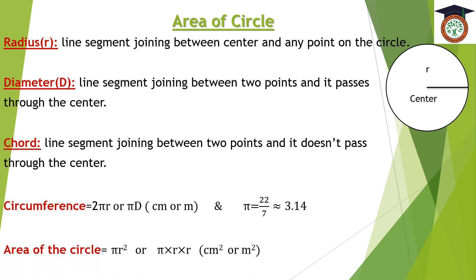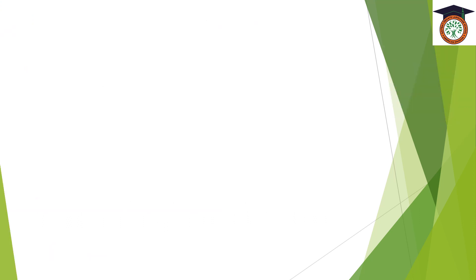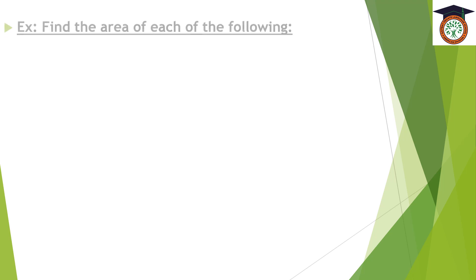The area of the circle equals π times R squared, or π times R times R. Its measuring unit is centimeter squared or meter squared. Then we will take some examples to know how to get the area of the circle.